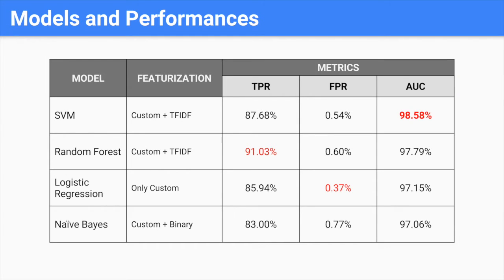We trained each model using different combinations of featurization approaches, then conducted parameter searches for the parametric models — Random Forest and SVM. Here we conclude the best performance of each model and their corresponding metrics and ROC curves. As shown by the AUC metric, the SVM model has the best ability to accurately separate spam from non-spam data.